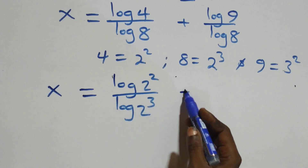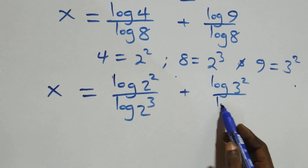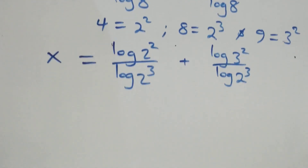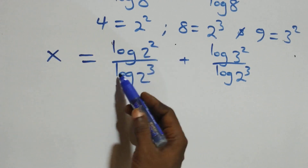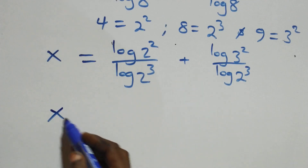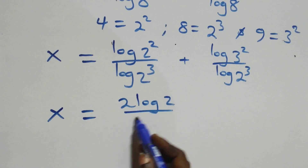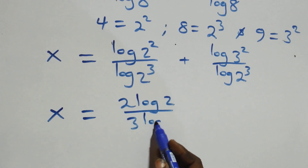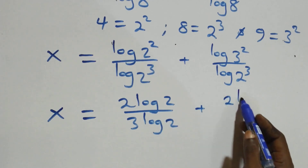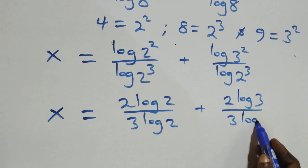What we have becomes x equals to log 2 squared over log 2 cubed, plus log 3 squared over log 2 cubed. Then we apply the power rule of log, bringing the exponents to the front: 2 comes here, 3 comes here. So we have x equals to 2 log 2 over 3 log 2, plus 2 log 3 over 3 log 2.